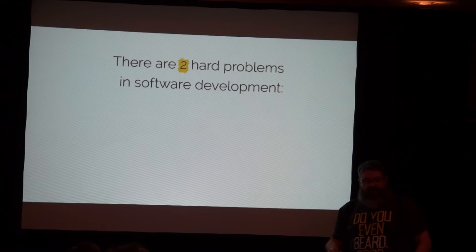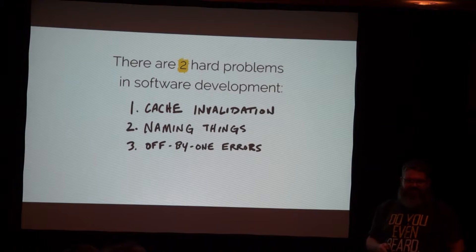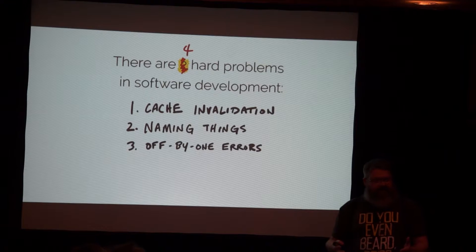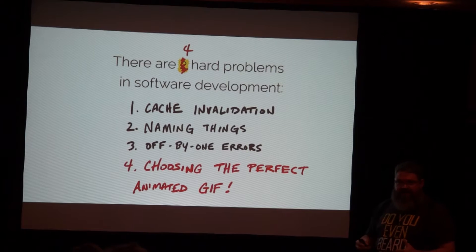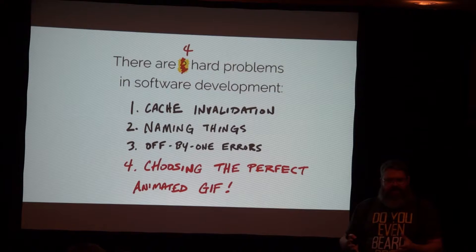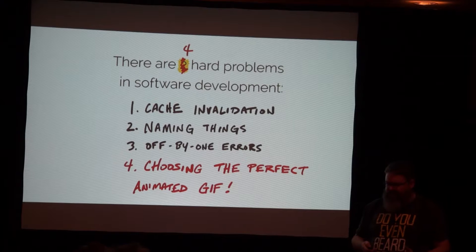There are two hard problems in software development: cache invalidation, naming things, and off-by-one errors. Well, I submit to you that there are actually four hard problems. At my company it's really important to choose the perfect animated GIF that goes along with how you feel about your coworker's code when you're messaging each other in Slack. And you know that Giphy is notoriously bad — no matter what you put in, it's going to pick the worst thing that could possibly come out. So I created an Electron app to solve this problem.